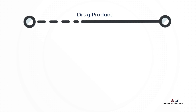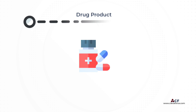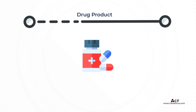A drug substance, because of multiple factors like sensitivity and stability, is required to be mixed with other components before being released for use in the market. The drug substance together with the added ingredients — excipients — is known as a drug product. A drug product is the finished product of any drug that is available in the market and is ready to use. When a drug product is within its packaging, it is called a finished product.